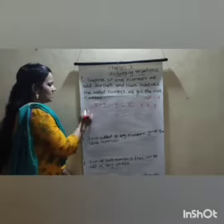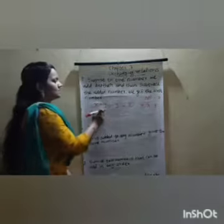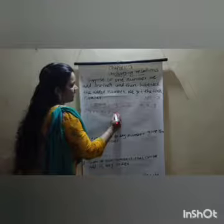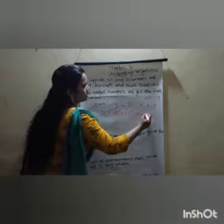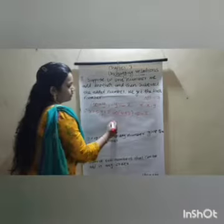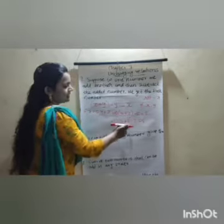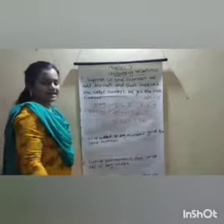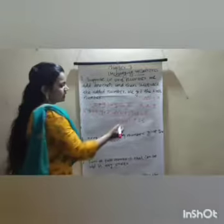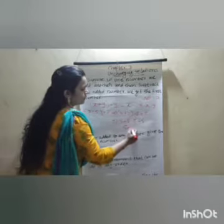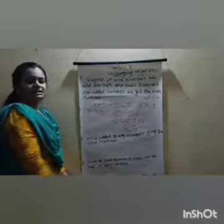Then we prove this equation. If X equals 5 and Y equals 2, we apply these numbers: 5 plus 2 minus 2 equals 5. Plus 2 and minus 2 cancel out — this equals 0. Then 5 equals 5. Left side and right side are equal, so the equation is proved.